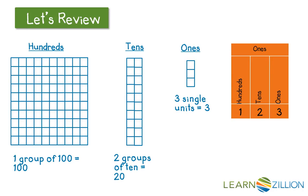Let's review. You're probably familiar with using base 10 blocks to represent numbers. For example, a group of 100 would equal 100, two groups of 10 would equal 20, and three singles would equal 3, so this would represent 123.